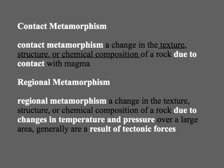This brings us back to the two types of metamorphism. Contact metamorphism involves contact with, or closeness to, magma. In the example we just saw, both slate and hornfels came from clay-rich rocks — likely shale, a sedimentary rock made of clays — that were changed by the heat and pressure from that magma.